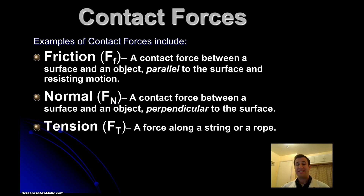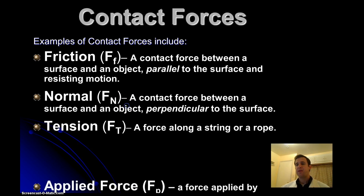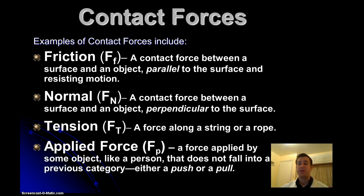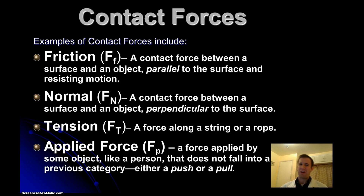Another contact force would be tension, like the rope we talked about before — you have to be touching the rope for it to pull on you. And the last contact force we're going to discuss is an applied force. This is a more vague force — a lot of different things could exert an applied force, but it would be a force exerted on some object, like a person, that doesn't really fall into any of the previous categories. It's still a push or a pull, just not from friction, normal force, or tension.